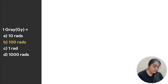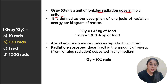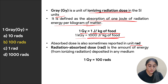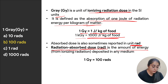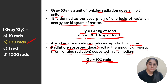Next: one gray is equal to — options are 10 rads, 100 rads, 1 rad, or 1000 rads. Gray is a unit of ionizing radiation dose in SI units, defined as absorption of one joule of radiation energy per kilogram of matter. One kilogram gray equals 1000 joules per kilogram of food. The absorbed dose is also reported in rads — radiation absorbed dose — which is the amount of energy from ionizing radiation deposited to any medium. One gray is equal to 100 rads, so the correct answer is 100 rads.